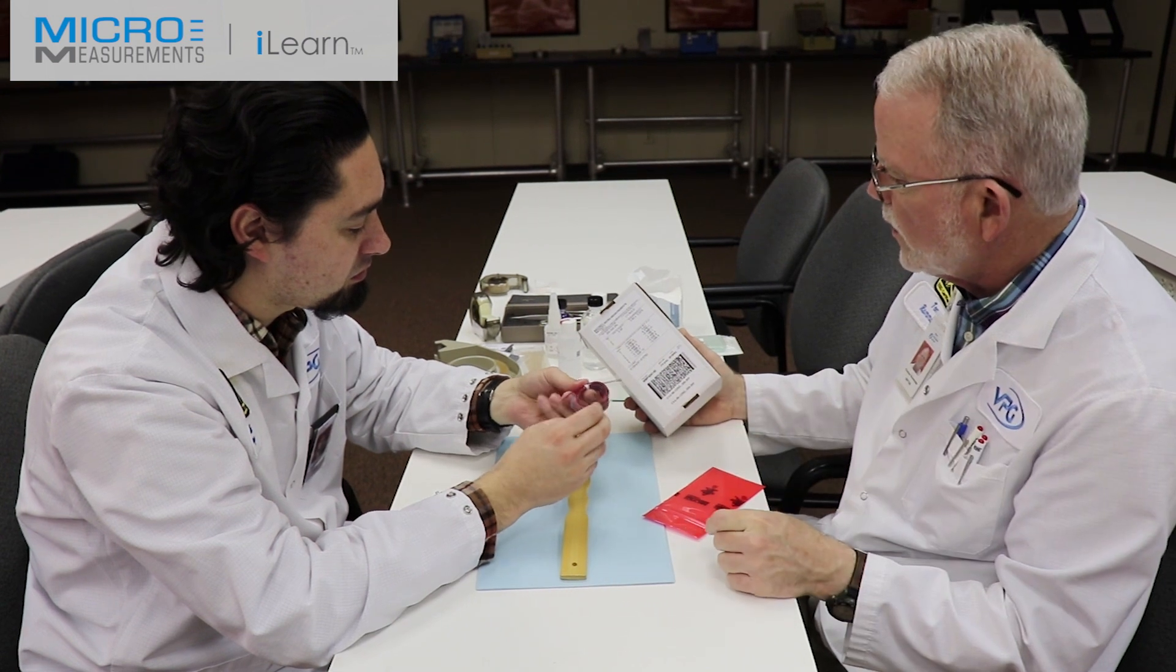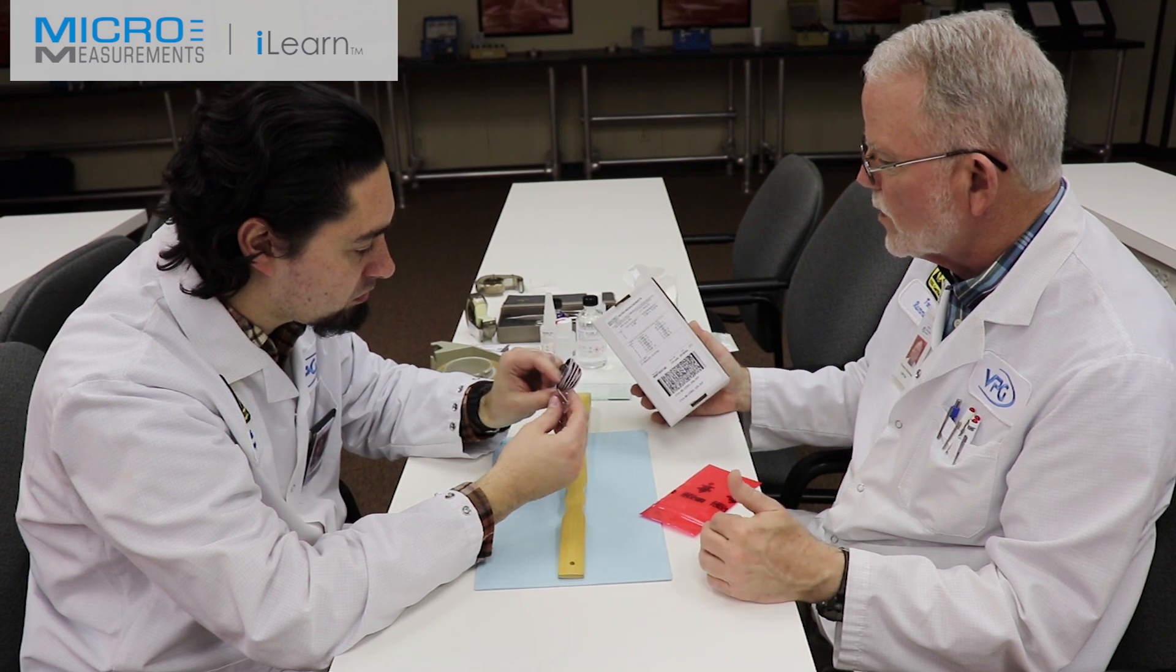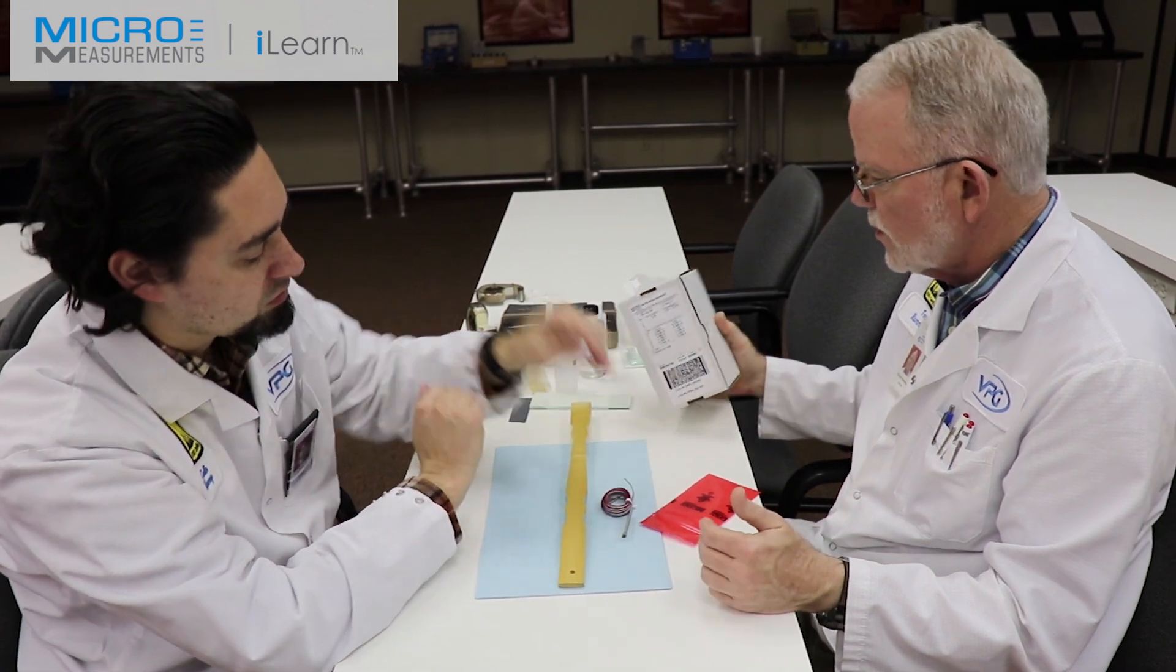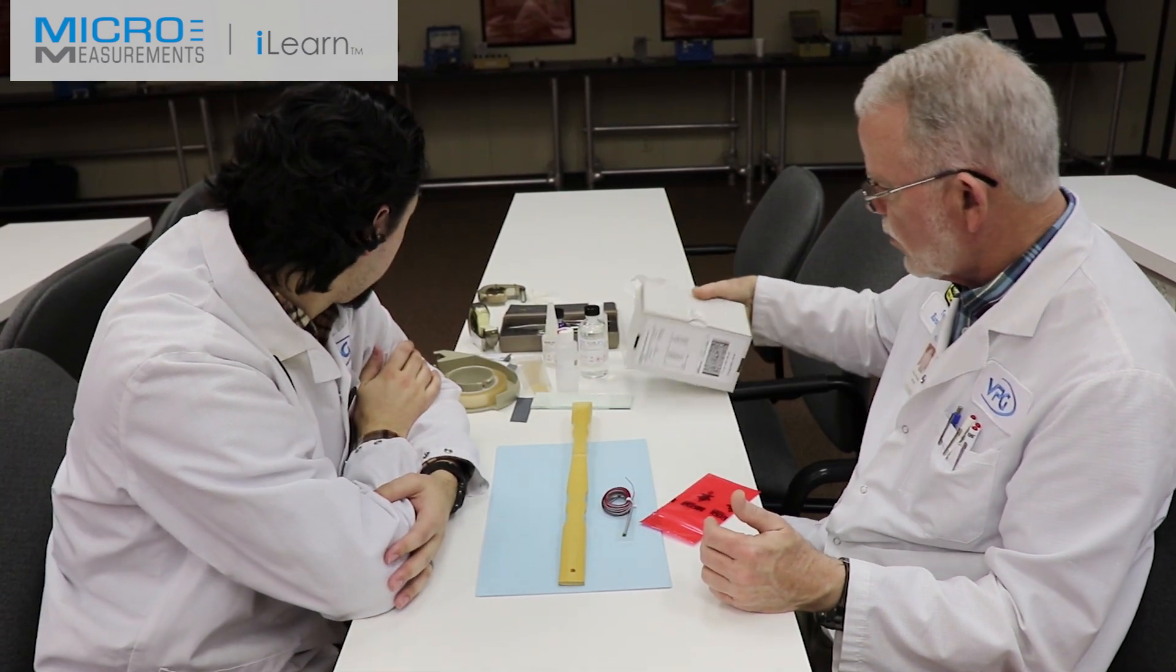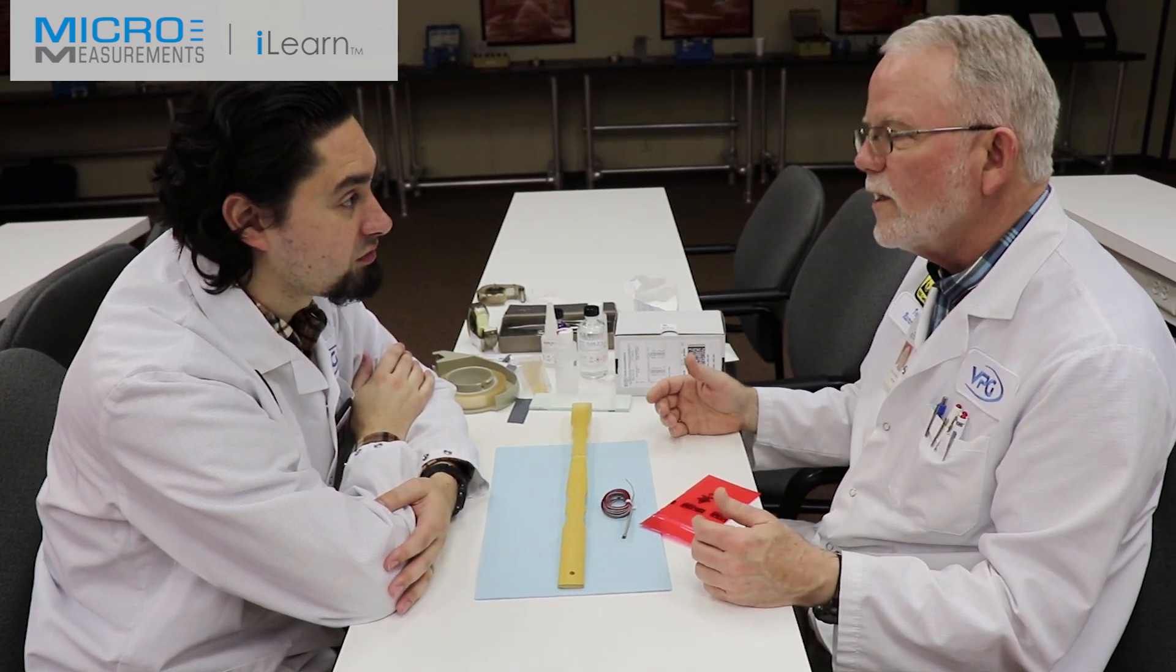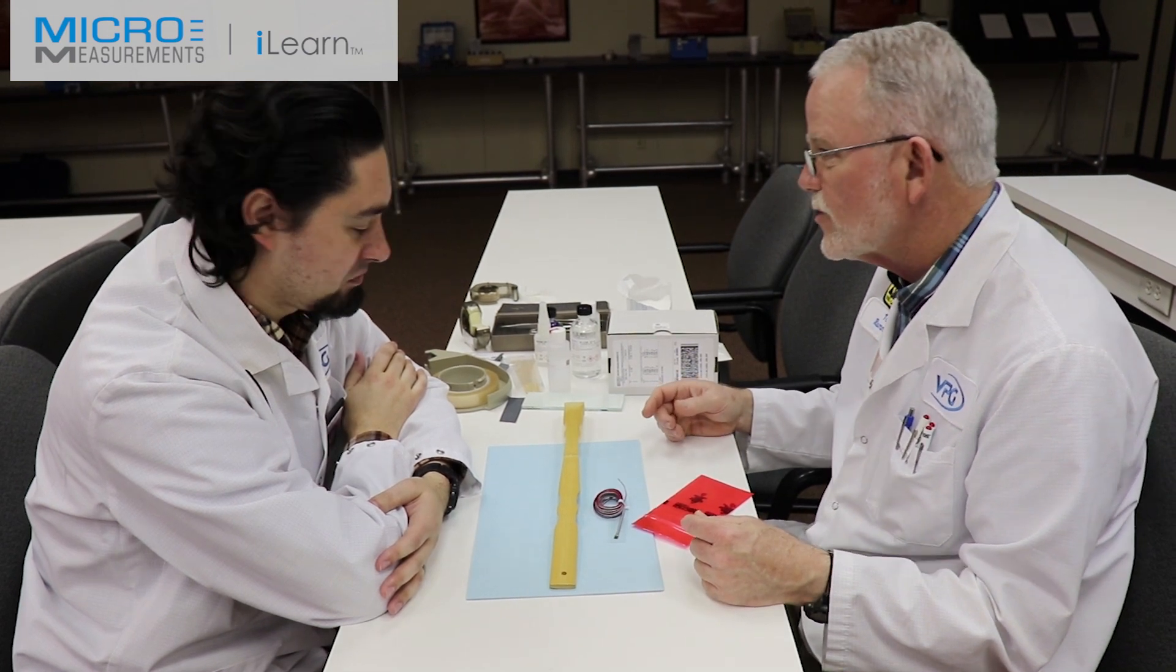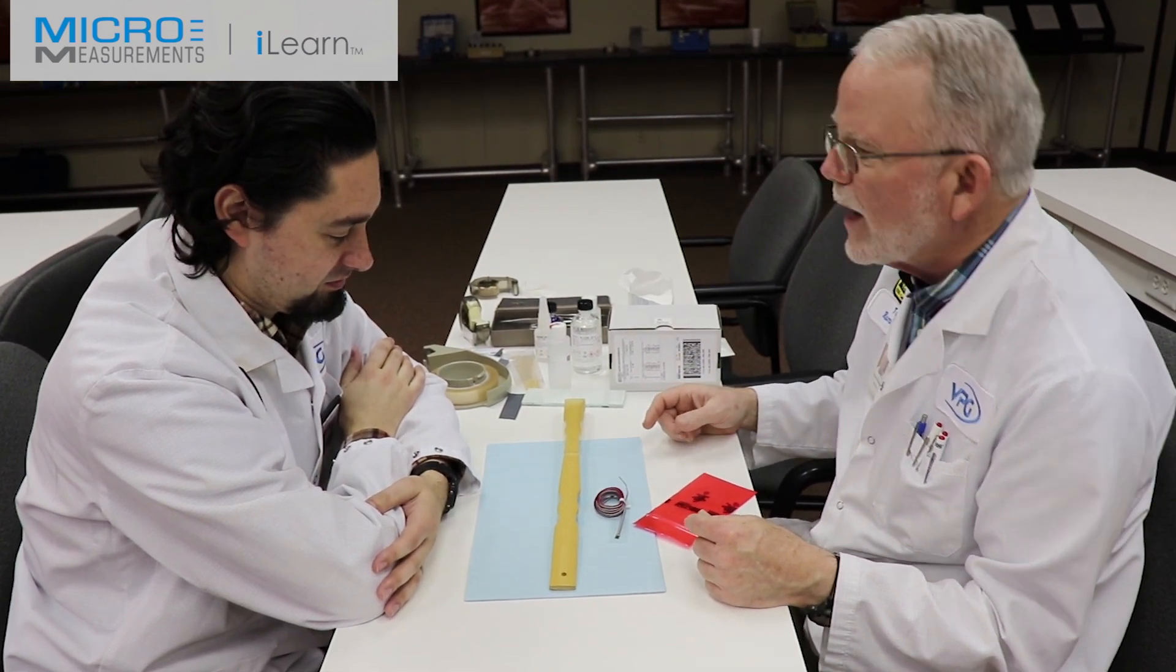The package now has ten pieces per package, making it more convenient. All the same features you would have with a standard Micro Measurements strain gauge: gauge factor, transverse sensitivity, thermal output are all the same. And today we're going to instrument a back scratcher to find out how hard you're scratching your back.